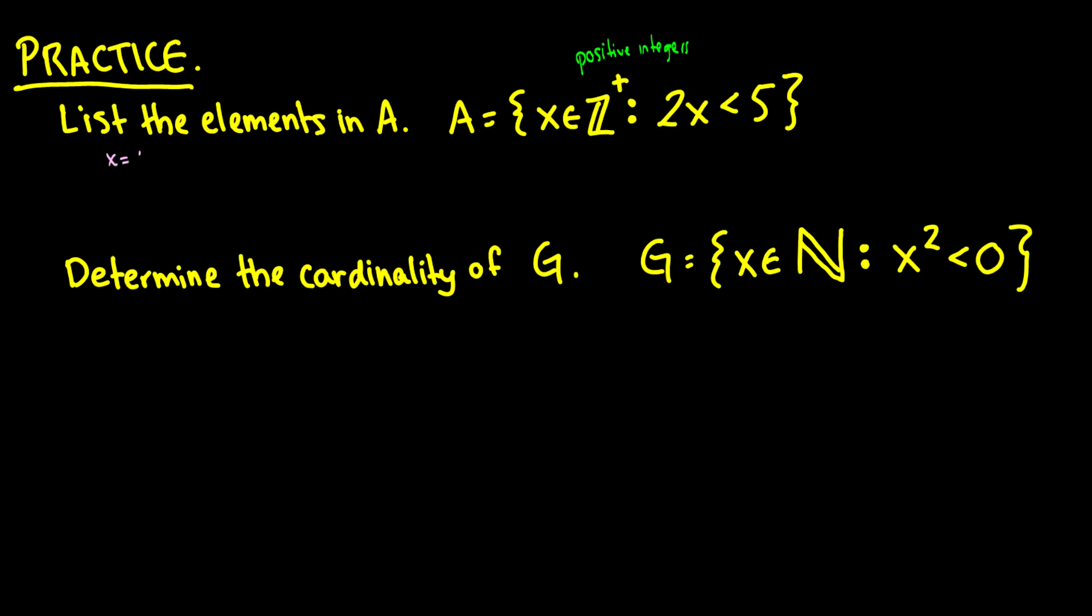So what we do is we start out with x is equal to 0. And we say, what is 2x? Well then 2x is equal to 0, which is less than 5. So in our set A, write the first element 0.